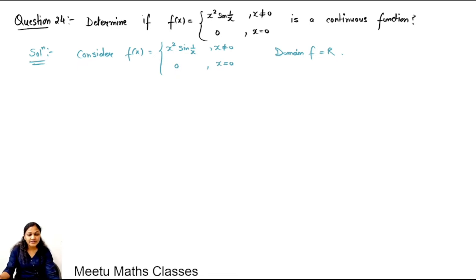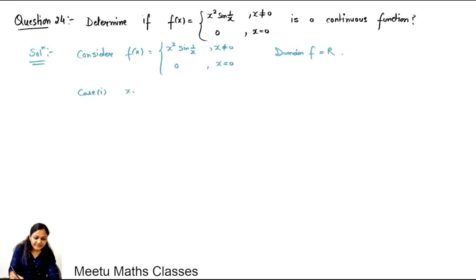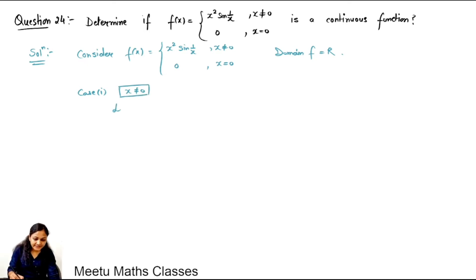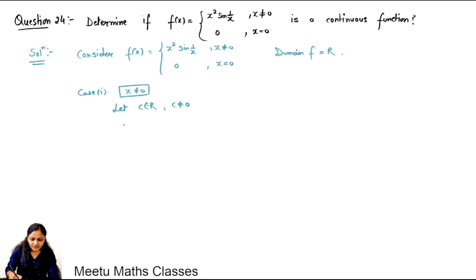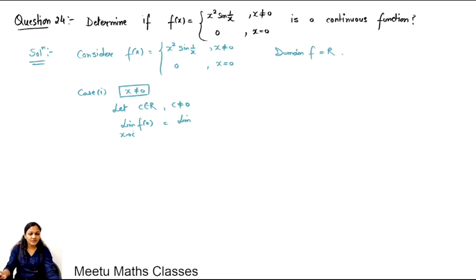The domain of the function is the whole real line, so we check continuity on the whole real line. In case 1, when x is not equal to 0, we take an arbitrary real number c such that c is not equal to 0. The limiting value of the function as x tends to c: since x is not equal to 0, the function is defined as x squared times sin(1/x).